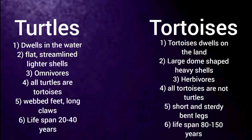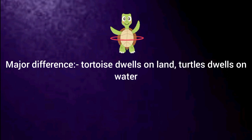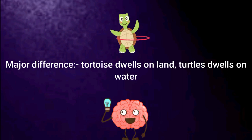Turtles' lifespan is about 20 to 40 years while tortoises' lifespan is about 80 to 150 years. The major difference between the two is that tortoise dwells on land while turtles live in the water or near the water all the time. Despite being slightly different, both are referred to in common many times, but the wise one knows the difference.